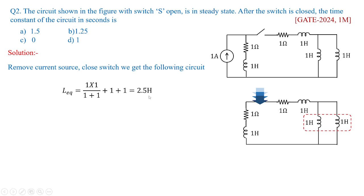So this is how we need to solve this problem. So L equivalent I am taking the value which is nothing but the parallel combination of these two henrys in series with 1 and 1. So it becomes 2.5 henrys and R equivalent equal to 2 ohms. Finally the time constant is given by L equivalent by R equivalent. So this 2.5 by 2 will give you the value as 1.25 seconds.